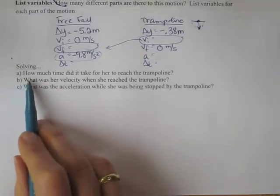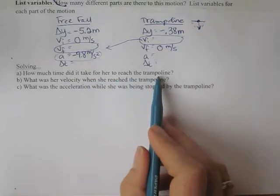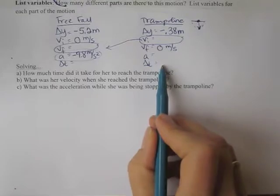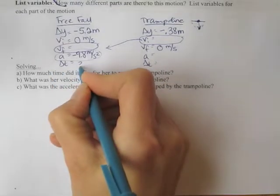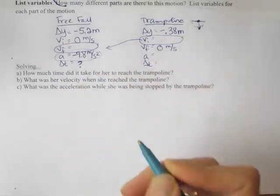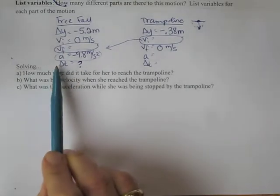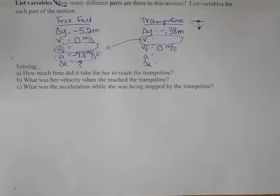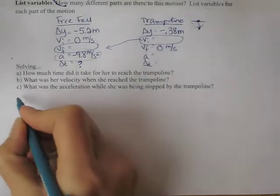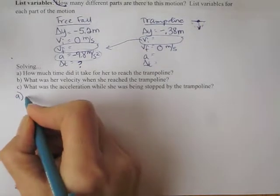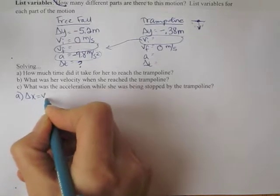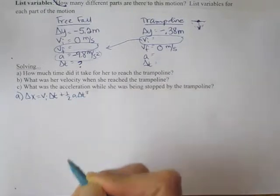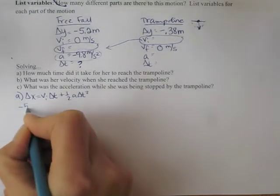Now we're ready to solve. How much time did it take for her to reach the trampoline? So that is not the time in the trampoline. That's the time in the air. So this is what I want to know. And that means I would want to find my equation that does not have a VF. And it looks like that would be equation 3. So write your equation. Then substitute your values with the units.